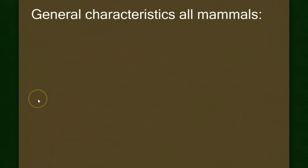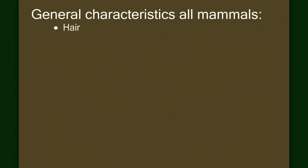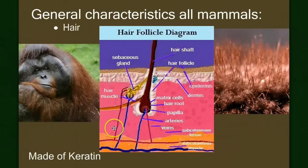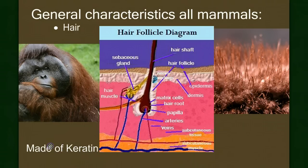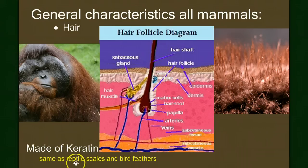What are the defining characteristics? There are a few characteristics that certainly are defining of mammals, and then one characteristic that is the defining one. Let's start with the obvious one: hair. All mammals have hair. It's a derivative of the skin, made of keratin — the same protein that makes scales of reptiles and birds' feathers. We suggest that hair evolved from scales, as did feathers.